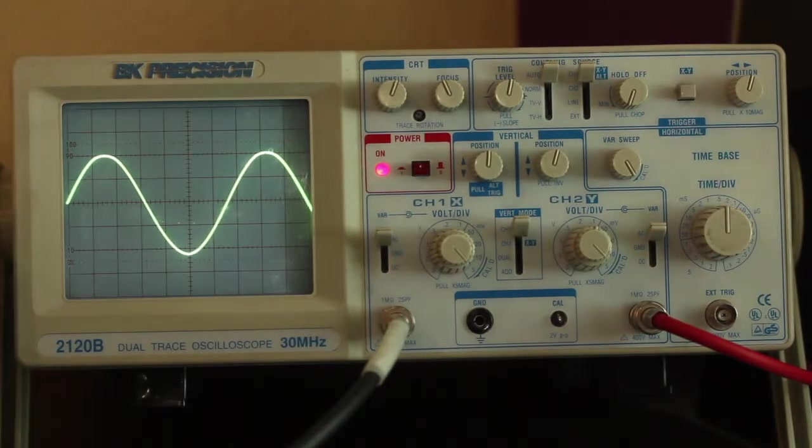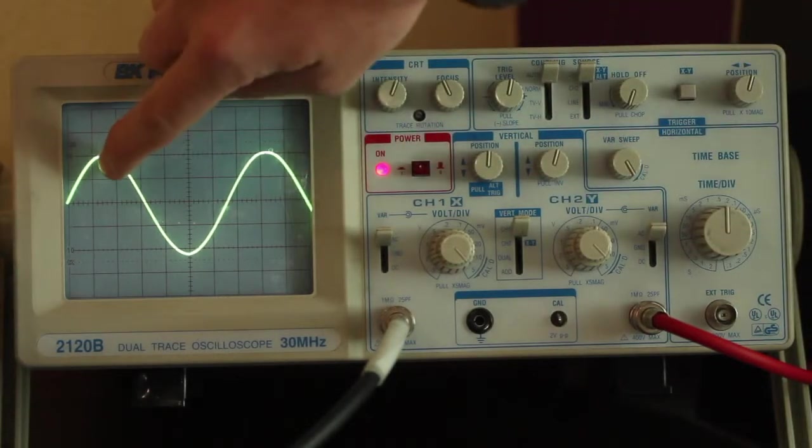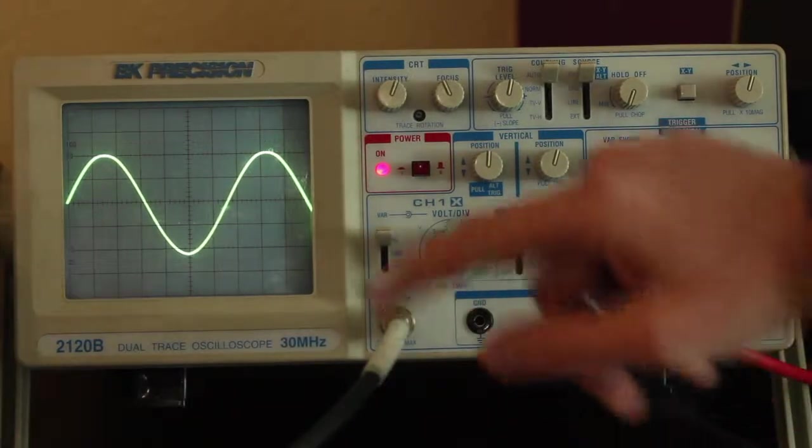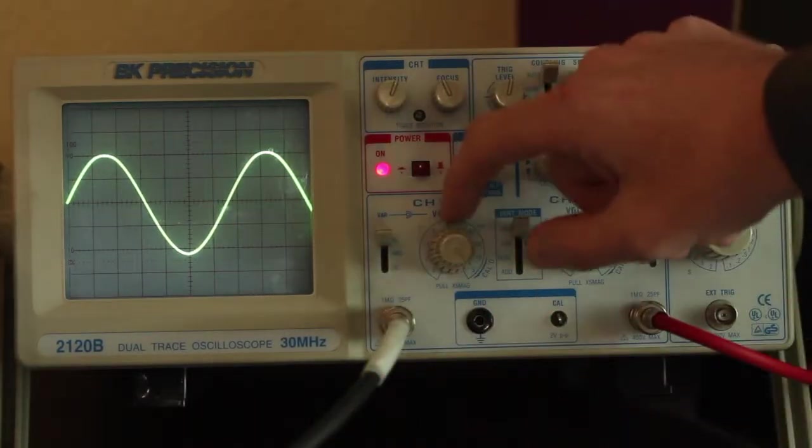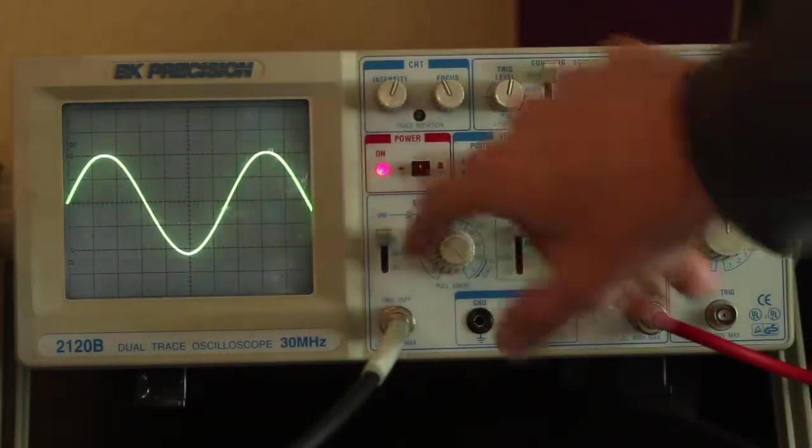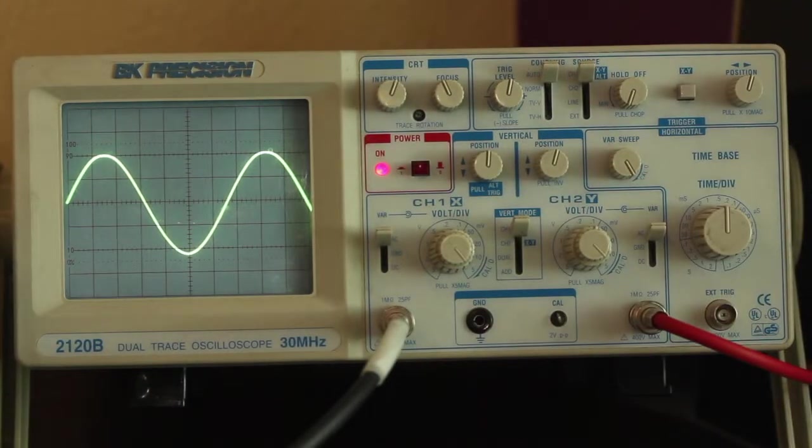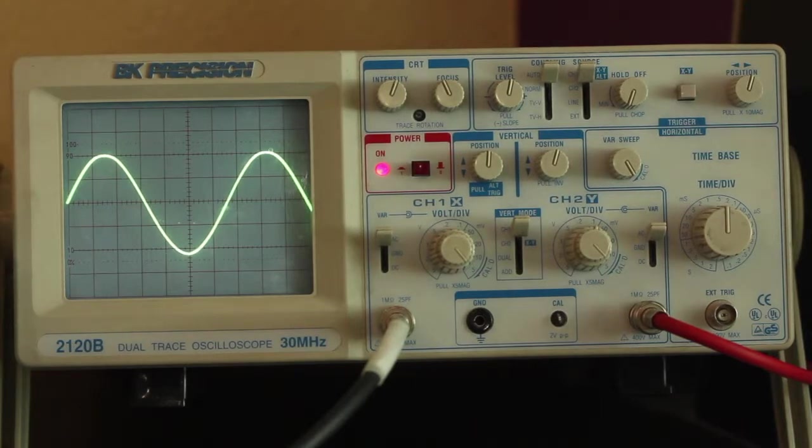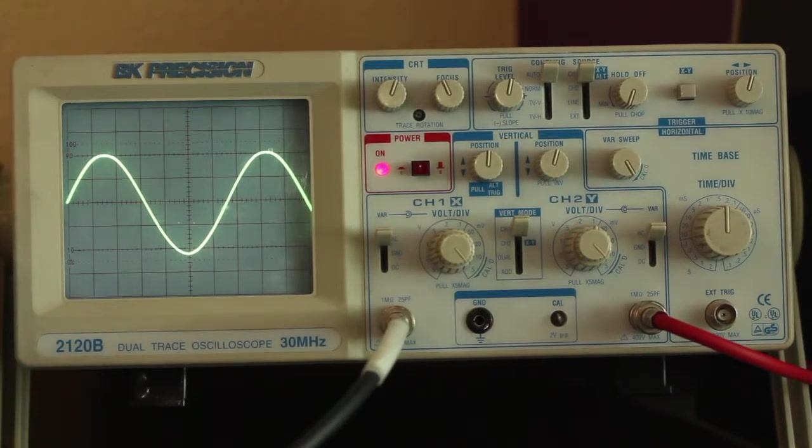And showing you again, we're taking up about 1, 2, 3, 4, and some change graticules in the vertical axis. And our volts per division is set to 2. So 2 times 4.2, let's call it, will give us 8.4 volts peak to peak.